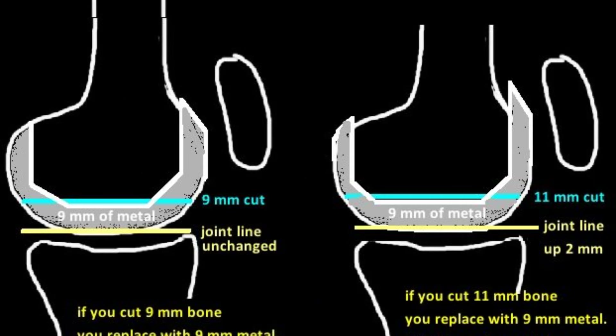Note there are exceptions. Sometimes surgeons will intentionally change the depth of the distal femoral cut. If there is a significant flexion contracture, resecting more distal femur will enlarge the extension gap without affecting the flexion gap, allowing more knee extension. However, every time you change the distal femur cut, you are also affecting the joint line. If you take a little extra bone from the distal femur, you raise the joint line. The implant will always be 9 mm, so if you cut 11 mm and replace it with 9 mm of metal, you have raised the joint line by 2 mm.